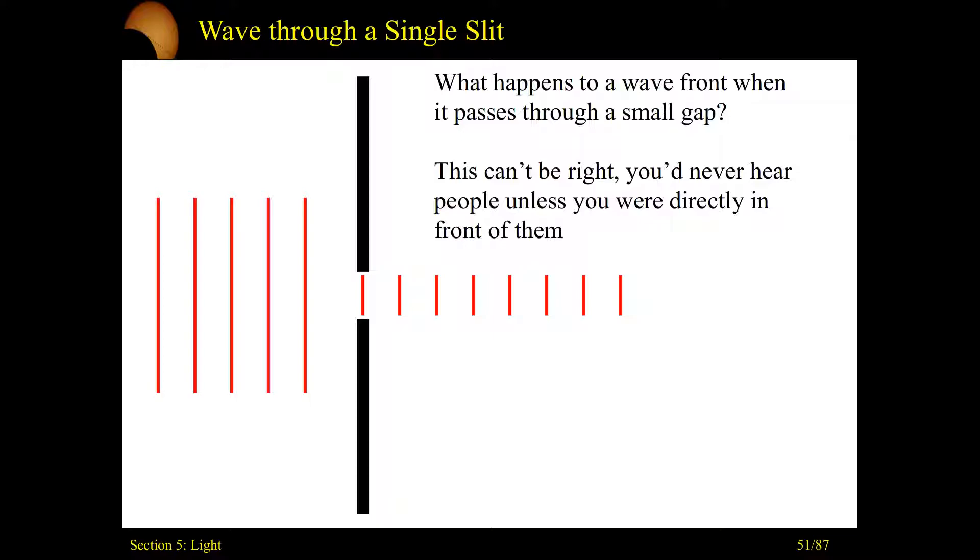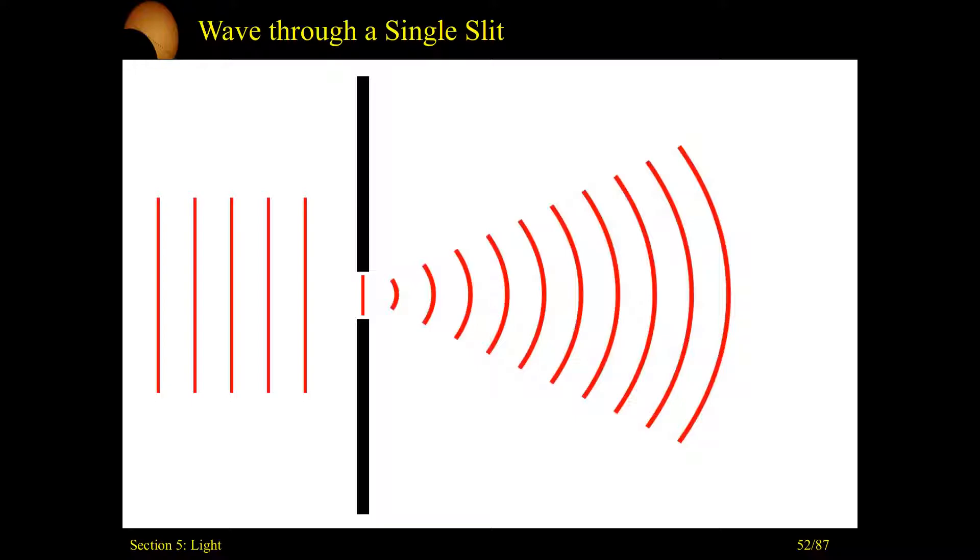So if this isn't how the sound waves propagate through a single tiny gap, here's what's really happening. The waves will propagate forward as what we call plane waves. They hit the gap and they start going out kind of like a circular pattern.